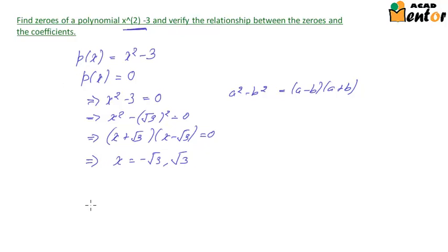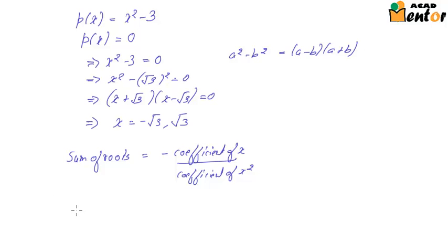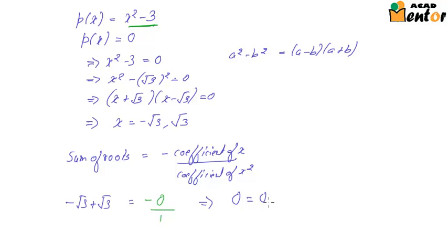Now let's verify the first relationship: the sum of roots. The sum of roots is given by minus the coefficient of x divided by the coefficient of x². Since the roots are -√3 and √3, their sum is -√3 + √3 = 0. There is no x term in the polynomial, so the coefficient of x is 0, giving minus 0 divided by 1 (coefficient of x²). The left-hand side is 0 and the right-hand side is also 0.